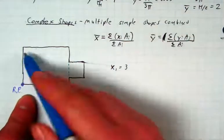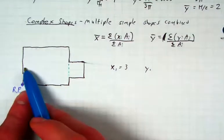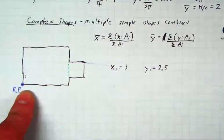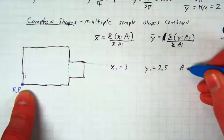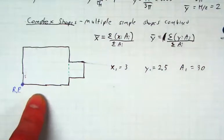What would your y1 for your first shape be? Or your y distance from your reference point? Very good. 2.5. I'm glad y'all could get that even though I was stumbling through my words there. And what would be the area of this shape? Area of shape one. 30. Very good.